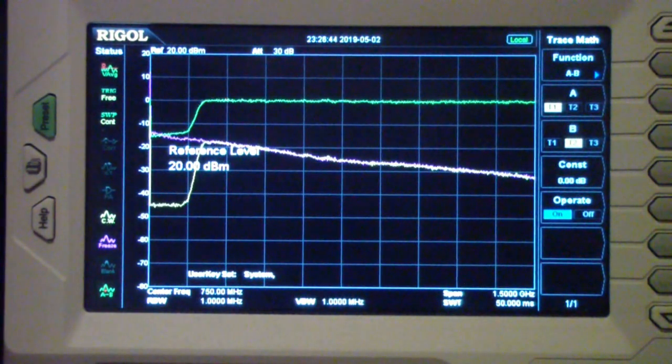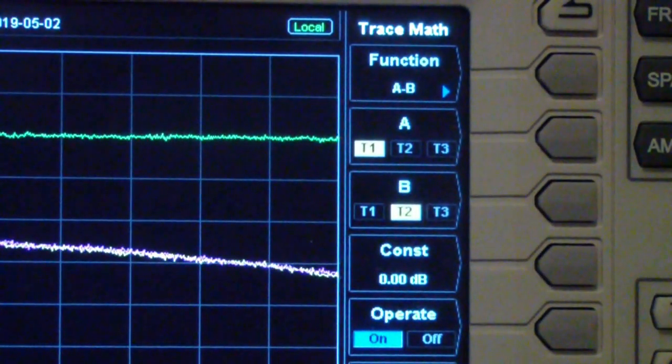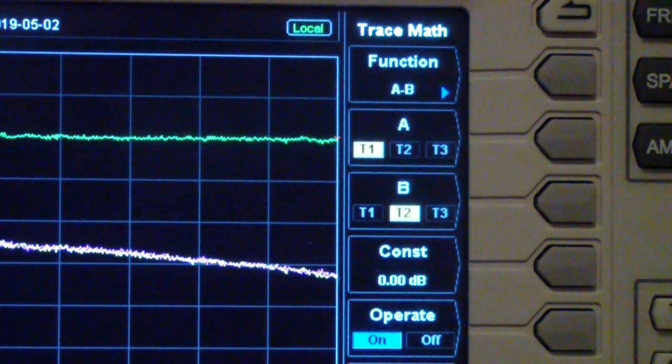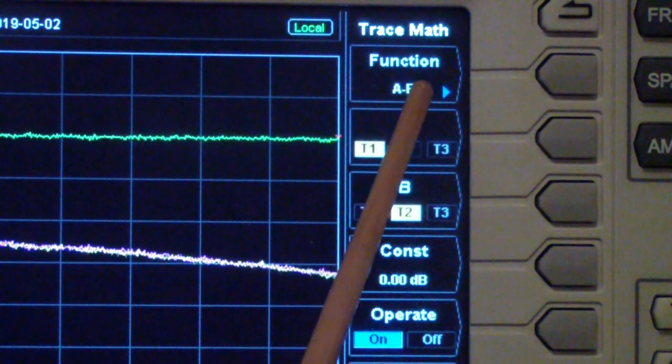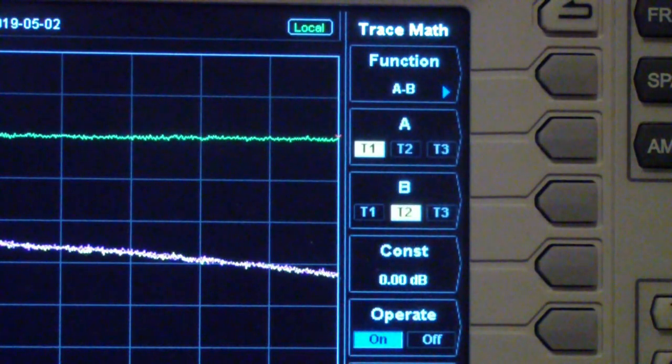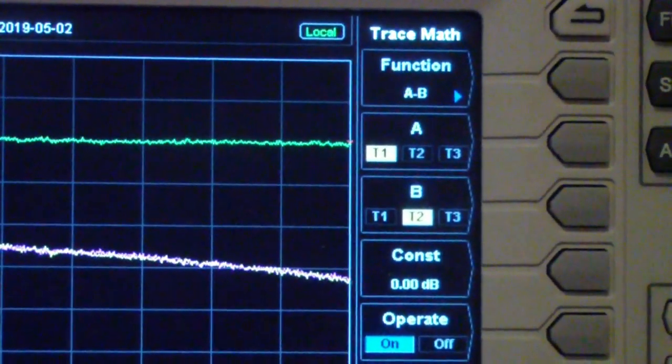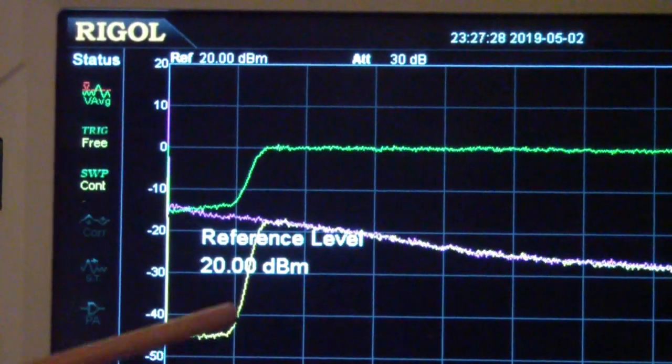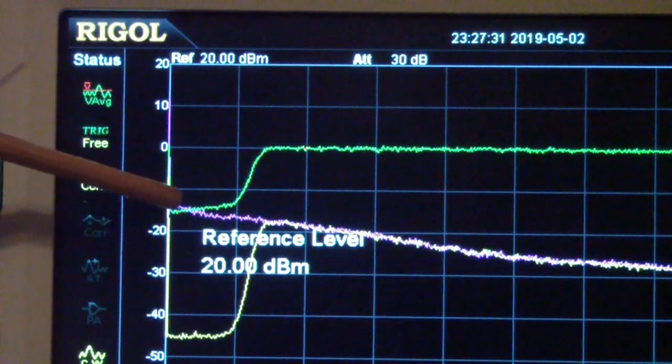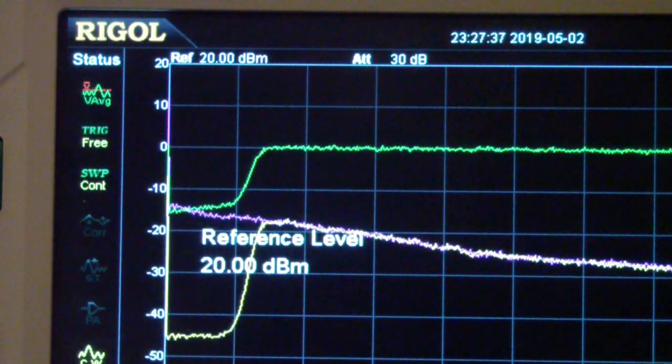But then I turned on the trace math functions, and let me show you right up there. And how this works varies from one spectrum analyzer to another. On the Rigol, what I have done is selected function A minus B. In other words, what I'm doing is looking back over here at the traces, I'm taking A and I'm subtracting B, which is the purple trace from A, and the result is being displayed at the top.